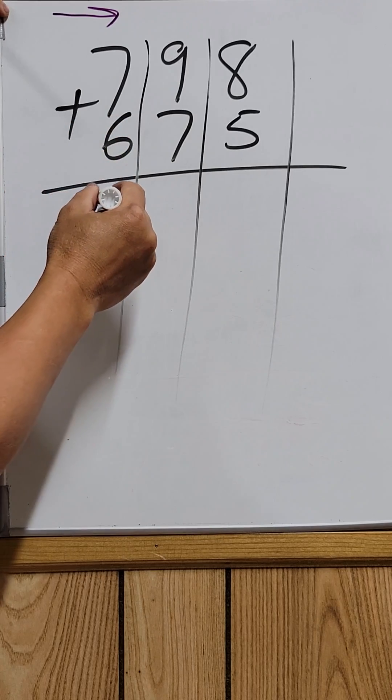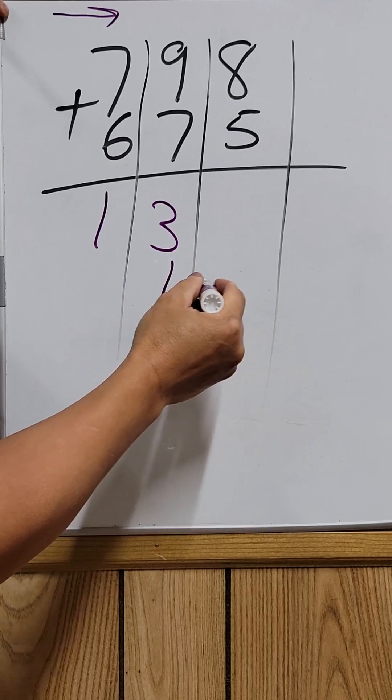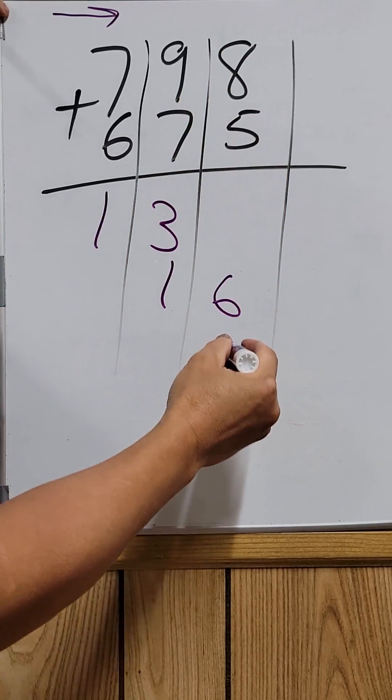7 plus 6 is 13. 9 plus 7 is 16. 8 plus 5 is 13.